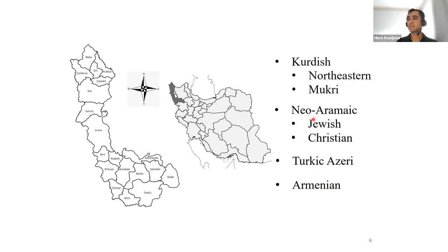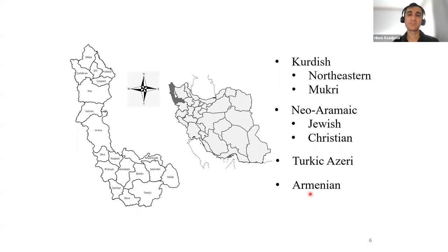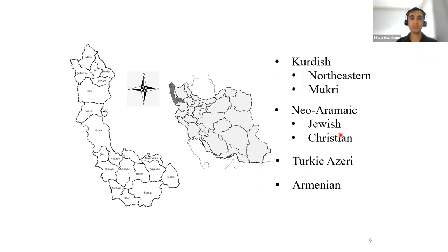All of these languages are in contact for centuries — I would say thousands of years. This is one important feature in terms of language contact. All of these languages are also under the superstratum of Persian as the official language of Iran. So there are two layers of different types of contact, and there are a lot of interreligious intermarriages between them. They are also in contact with Persian as the lingua franca, the education, and media language of Iran.